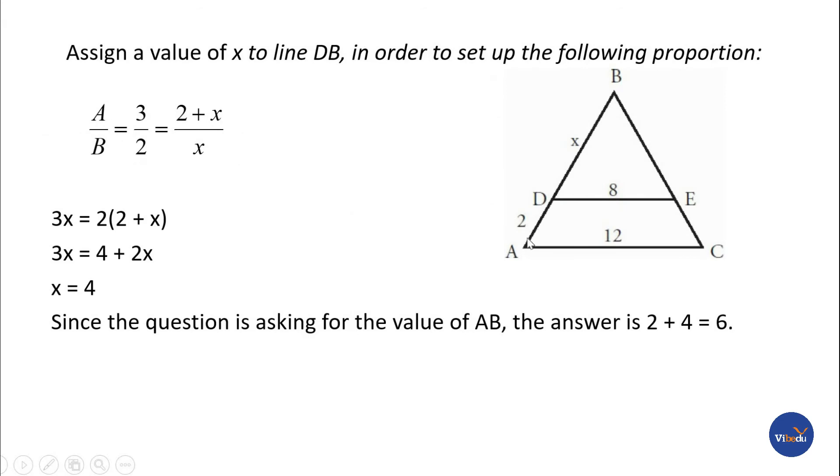We want AB, so we set up the proportion: 3 by 2 equals 2 plus X divided by X. Cross multiplying: 3X equals 2 into 2 plus X, which gives 3X equals 4 plus 2X.